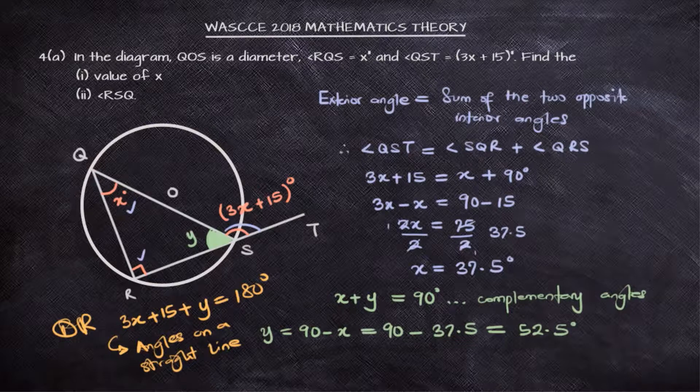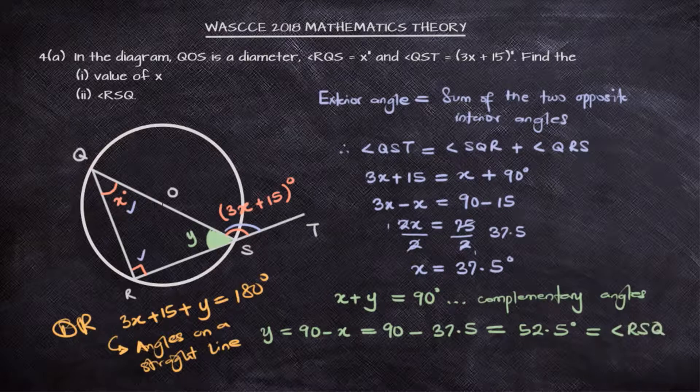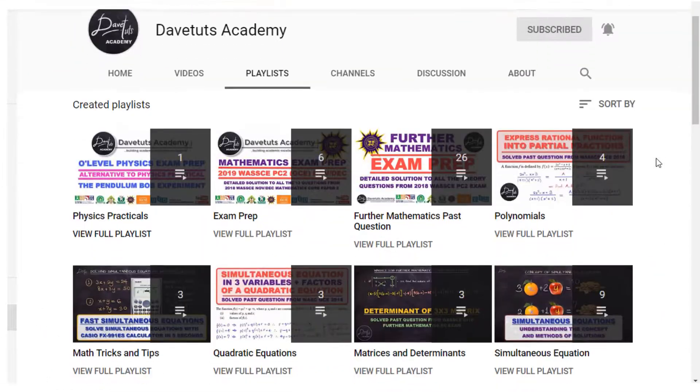So this is our angle RST, which is Y at 52.5 degrees. So that's all we are going to be having in our lecture today.